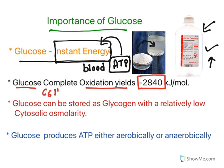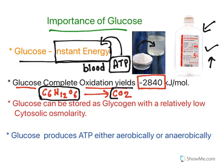Glucose complete oxidation yields 2840 kilojoules per mole. Glucose is a C6H12O6 molecule. Complete oxidation means it is completely converted to carbon dioxide. In the human body, when we take all sorts of carbohydrates they are converted to glucose in the digestion process, and that glucose is completely oxidized inside the cell. Carbon dioxide is released — this is what we exhale — and during this process energy equivalent to 2840 kilojoules per mole is released.